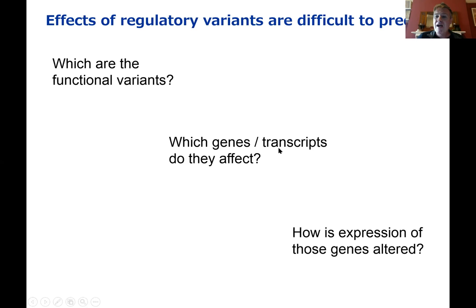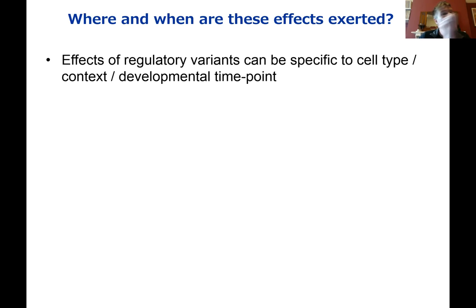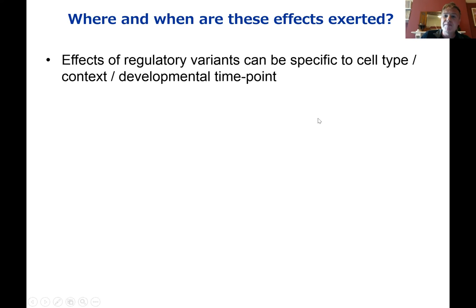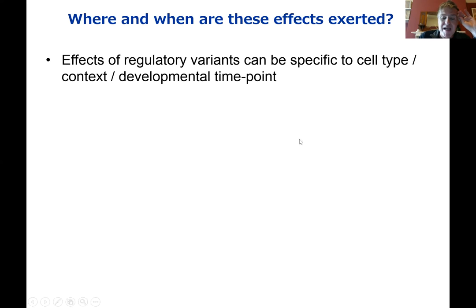We need to know how expression of those genes is altered — are they up-regulated or decreased in relation to the risk variant — because that's important for accurately modelling gene expression changes and potentially for therapeutically targeting them. We also need to know where and when these effects are exerted, which can inform our understanding of the cellular and developmental nature of those conditions. Effects can be very different and specific to cell types, context, and developmental time point — either through the gene not being expressed in that cell type, or through differences in expression of interacting trans-regulators or epigenomic modification of that region.